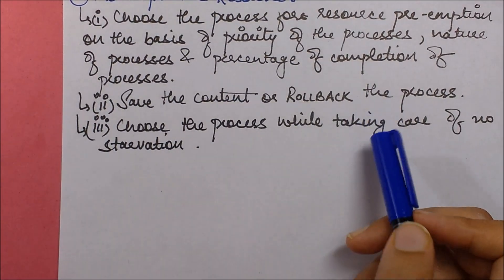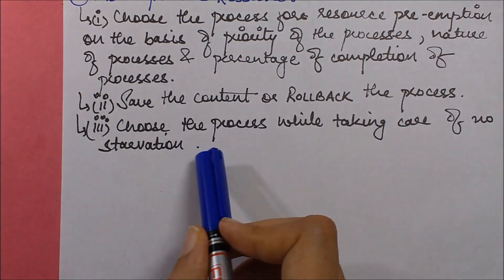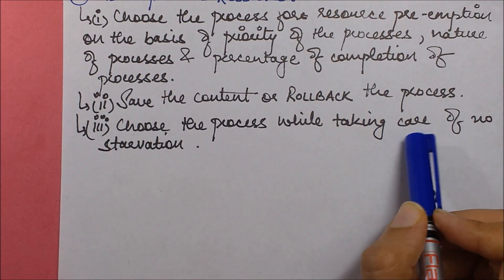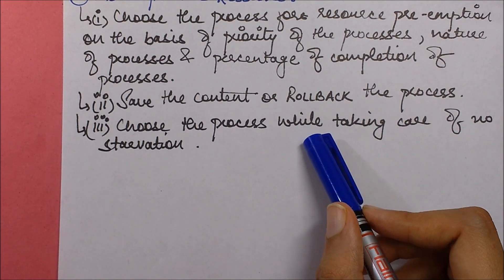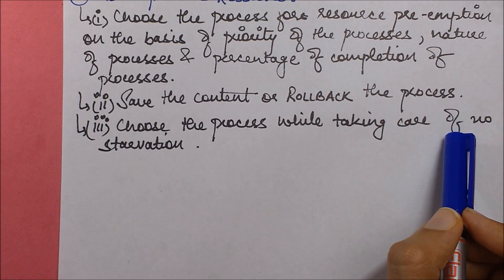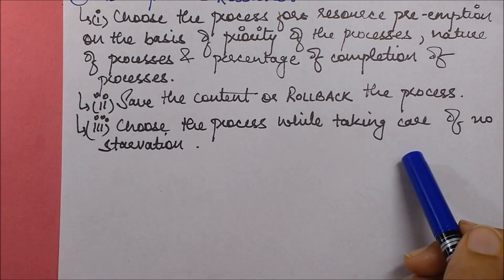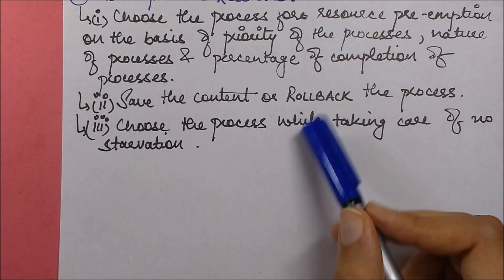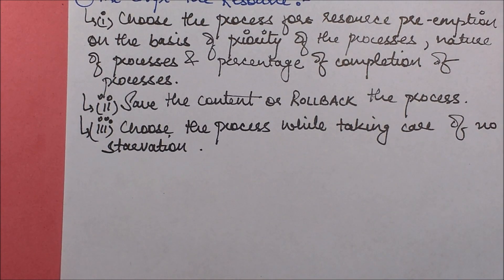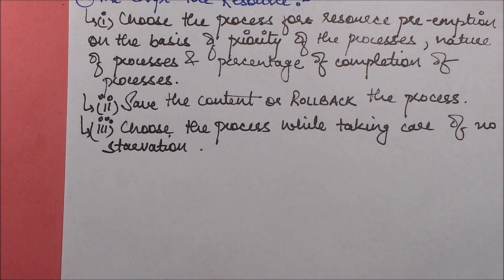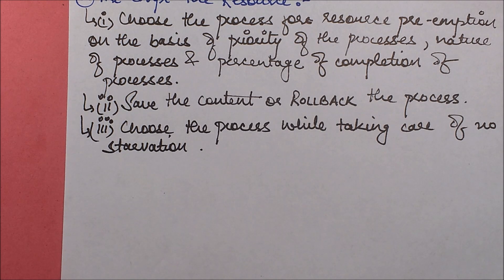You also need to save the content or roll back the process. While choosing the process to preempt, take care that there is no starvation — no process should get starved because of your decision. That's all for this session on deadlock detection and recovery. More topics on deadlocks, including Gate exam questions, will be covered in upcoming sessions.